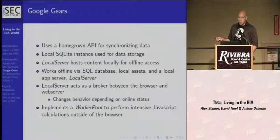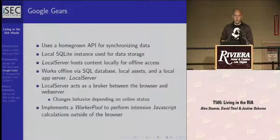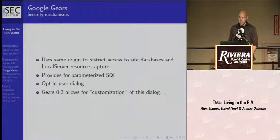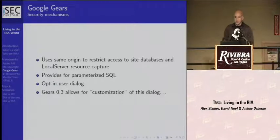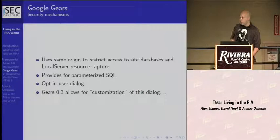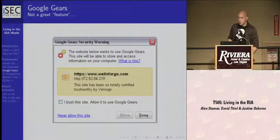If you're disconnected, Gears will cache content and serve it back up from a local web server. Worker pools in Gears are a method for offloading intensive JavaScript calculations to be processed elsewhere rather than running inside the browser, where they might lock the UI or diminish user experience. For the most part, the mechanisms in Gears use the same origin as a security precaution. They do give the ability to use parameterized SQL statements for accessing local database stores, and they do prompt for install — though not a very informative prompt.